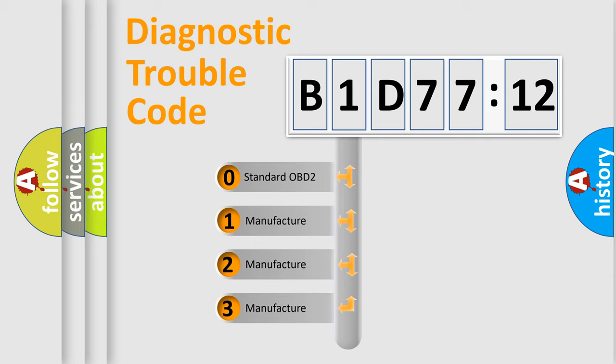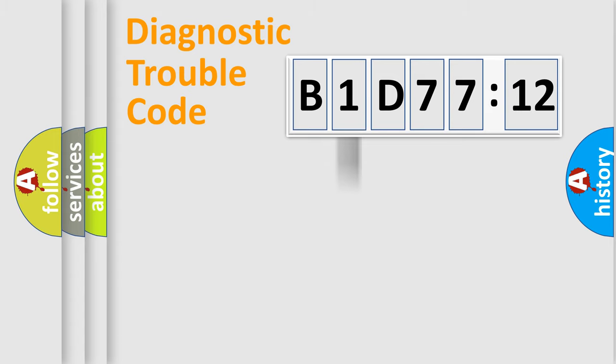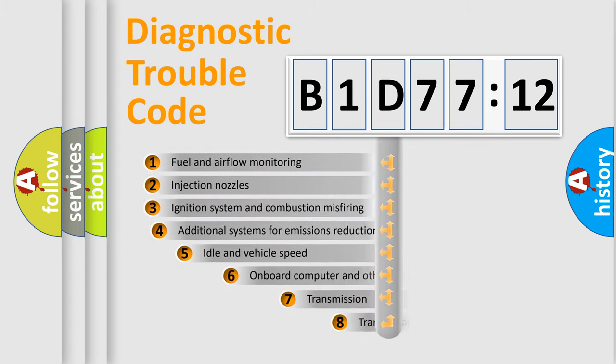If the second character is expressed as zero, it is a standardized error. In the case of numbers 1, 2, 3, it is a manufacturer-specific expression of the car-specific error.